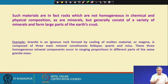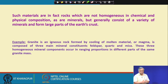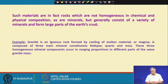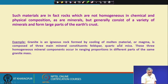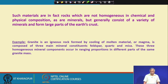These materials are in fact rocks — sometimes called stratified rocks — which are not homogeneous in chemical and physical composition as minerals are, but generally consist of a variety of minerals and form large parts of the earth's crust. Take granite as another example: it is an igneous rock formed by cooling of molten material or magma, and is composed of three main mineral constituents — feldspar, quartz, and mica. These three components occur in varying proportions in different parts of the same granite mass, so the physical properties of granite also vary.